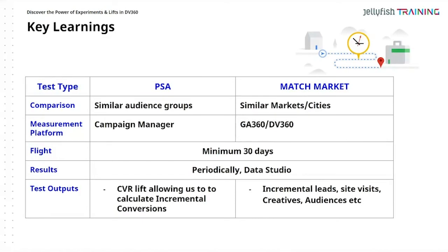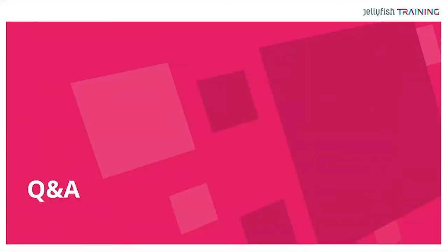To conclude: you have similar audience comparison groups with public service announcement tests, match market with similar markets or cities, use Campaign Manager, push audiences from Google Analytics 360 into DV360 and test them. The flight should be a minimum of 30 days. Results can be reviewed periodically or in Data Studio in real time. Test outputs such as conversion lift allow you to calculate incremental conversions, leads, site visits, creatives, or audiences. If you'd like to know more or have a client looking to test, feel free to speak to me privately.